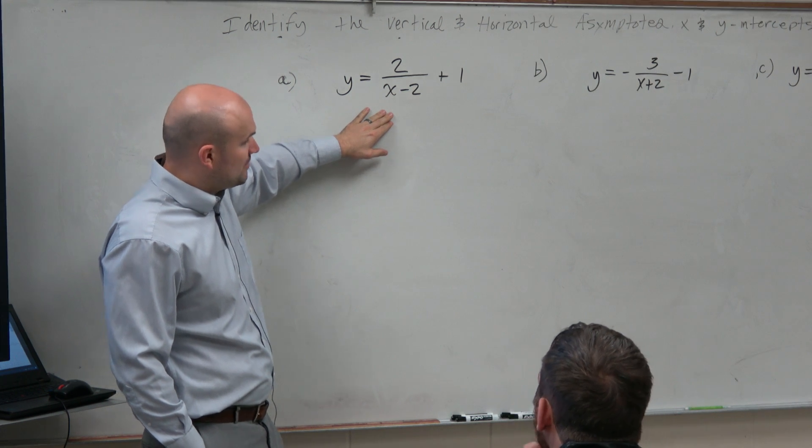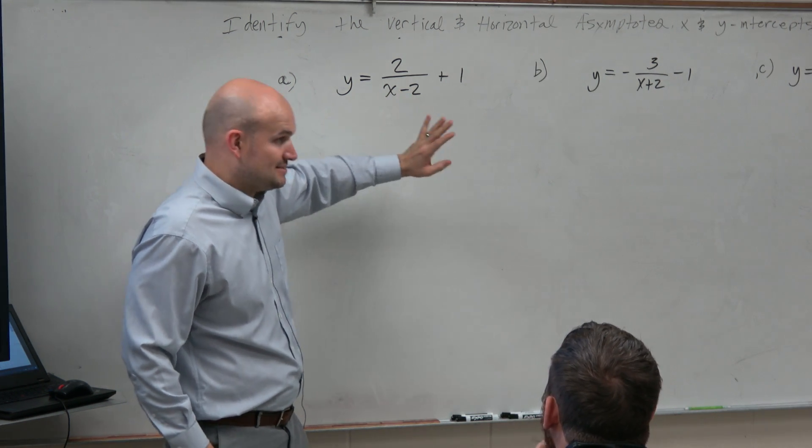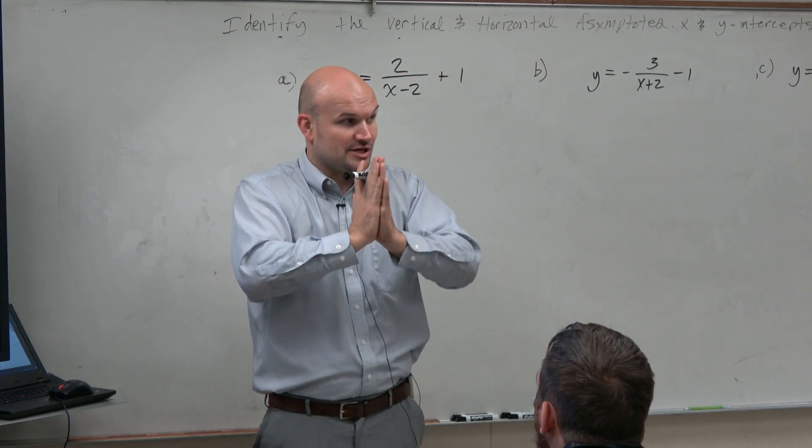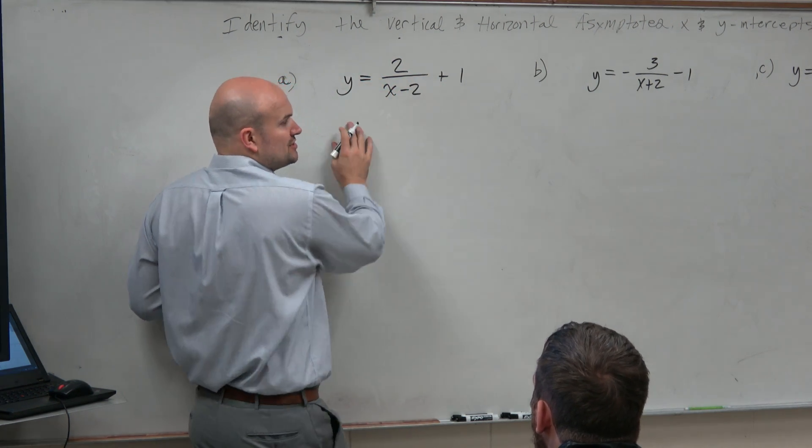So in this example, what we want to do is first identify the vertical asymptotes. So we know that the parent function has a vertical asymptote at x equals 0. Actually, let's identify the transformations first.